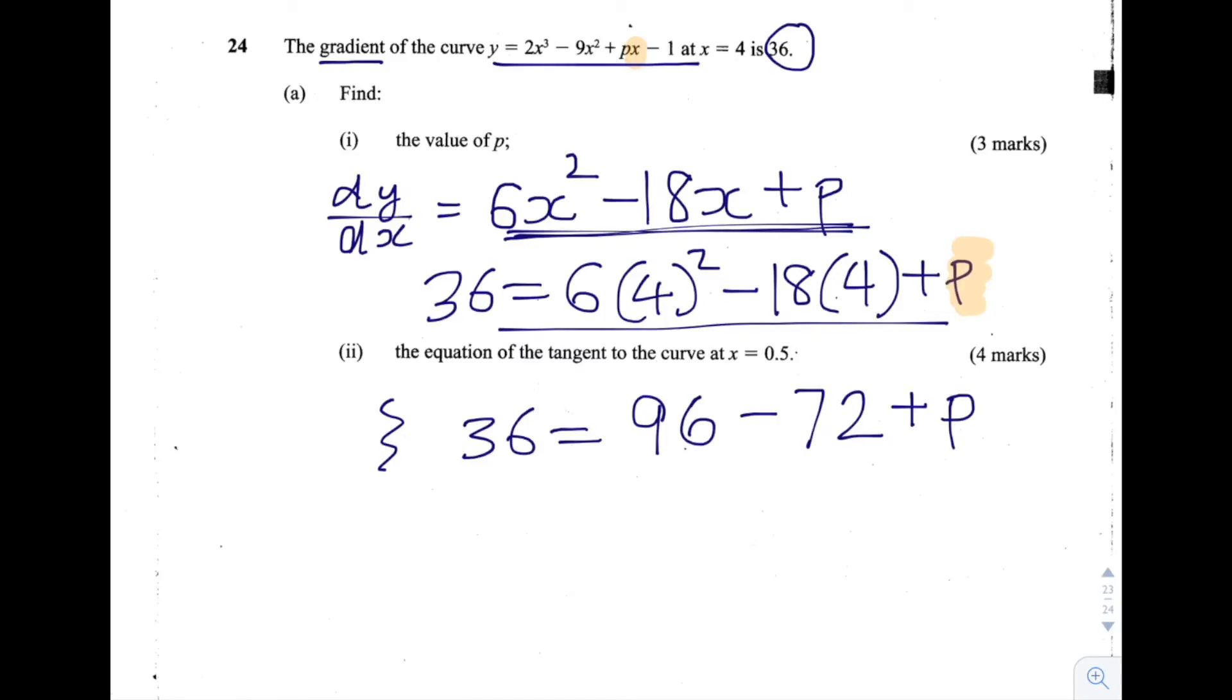So 96 minus 72 is equal to 24. So 24 plus p is equal to 36.